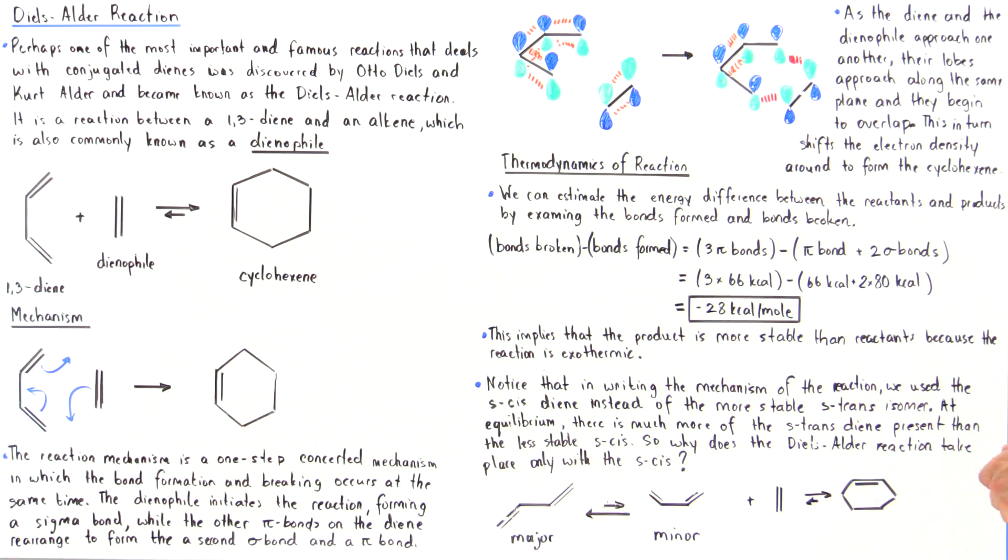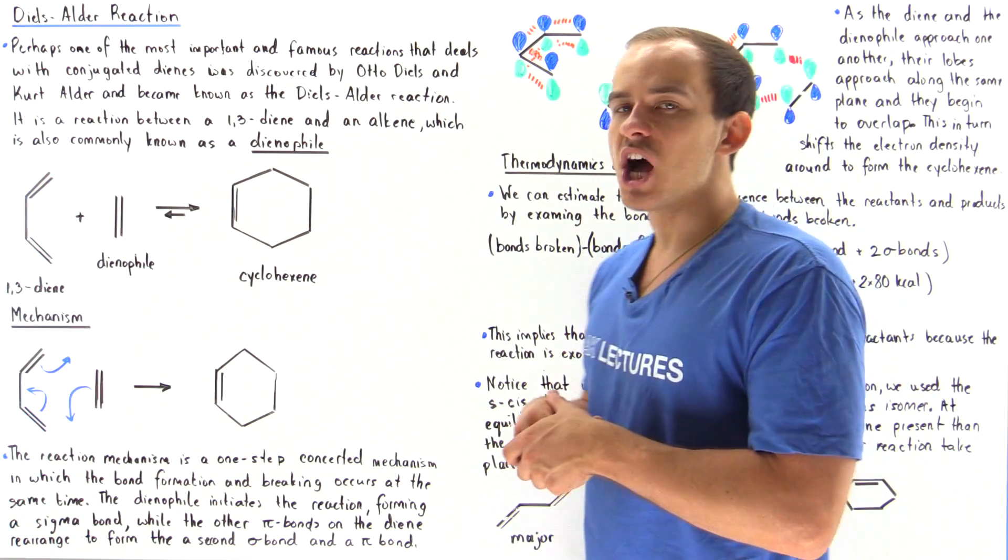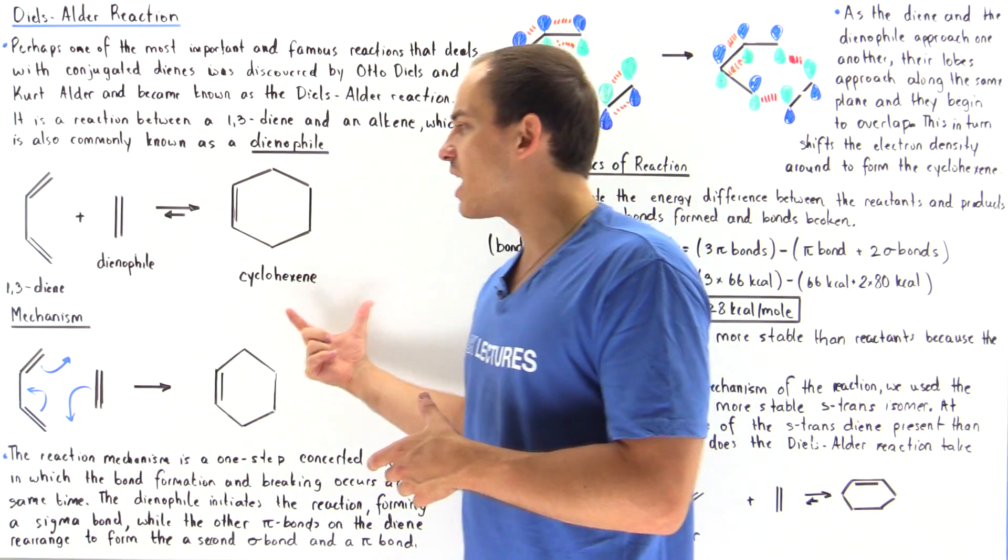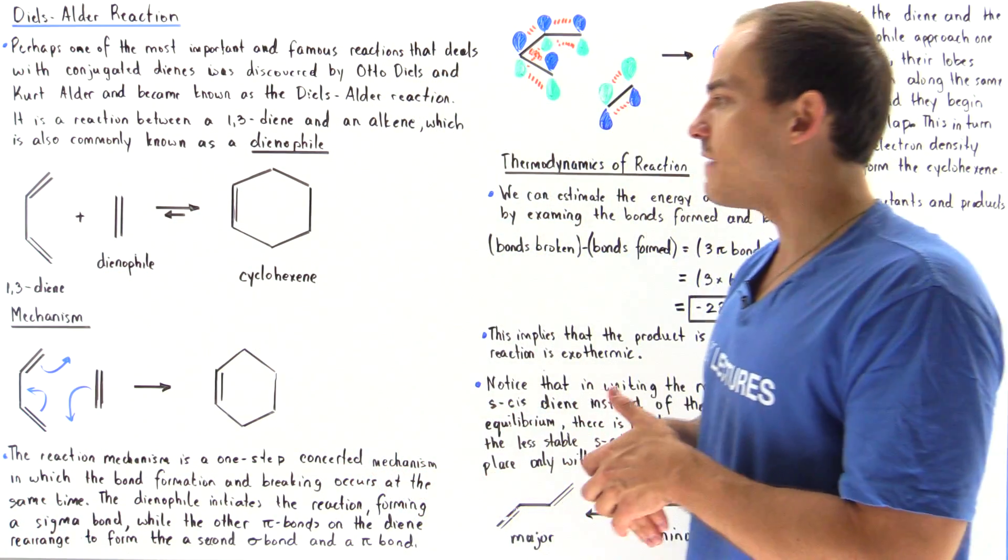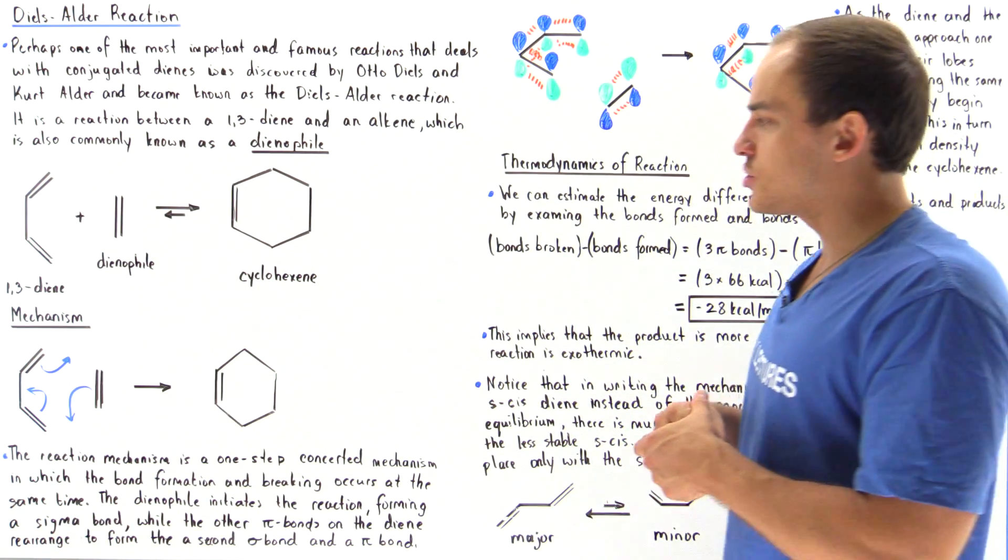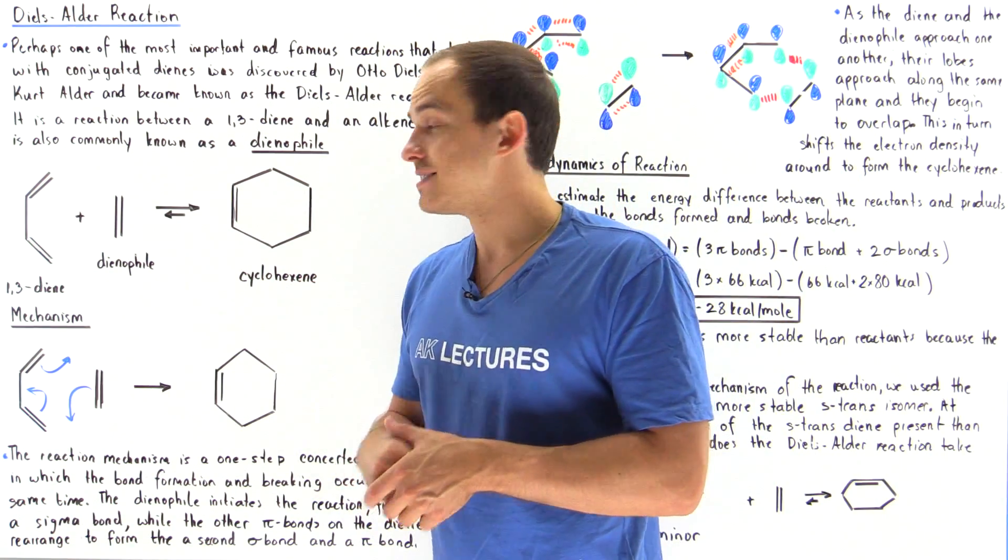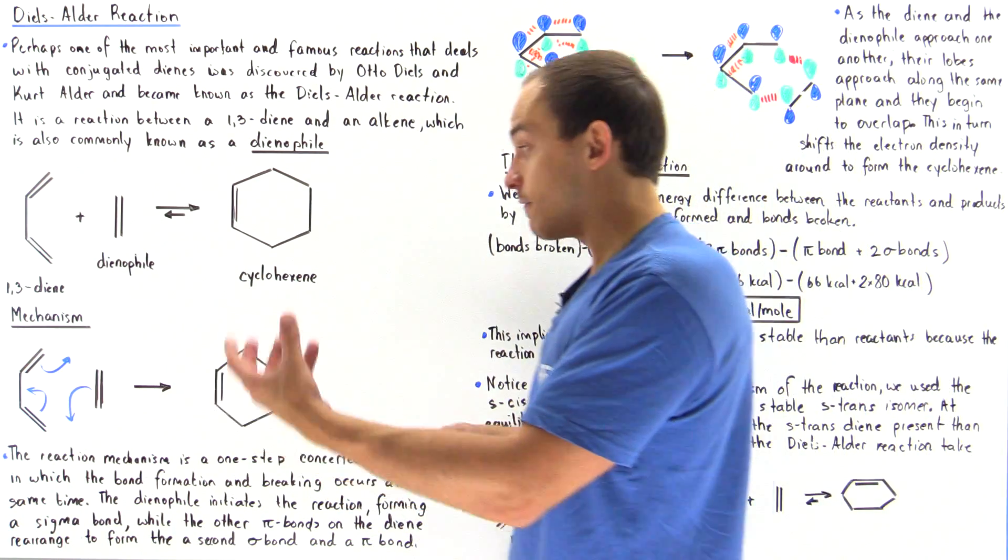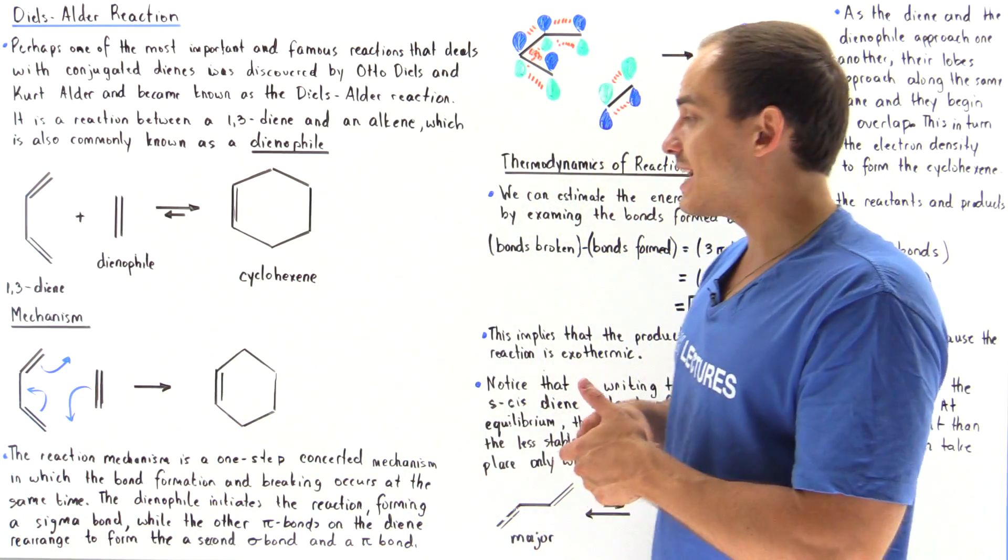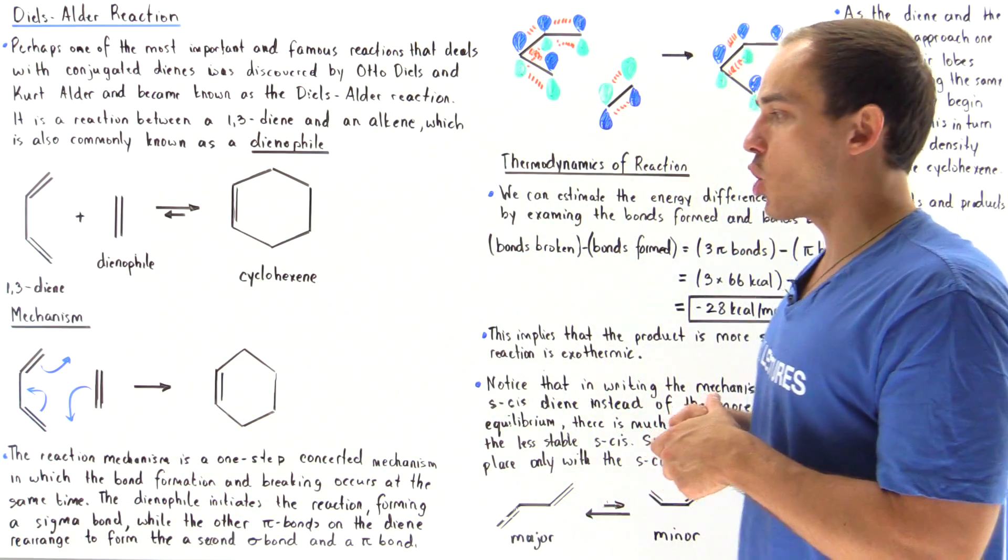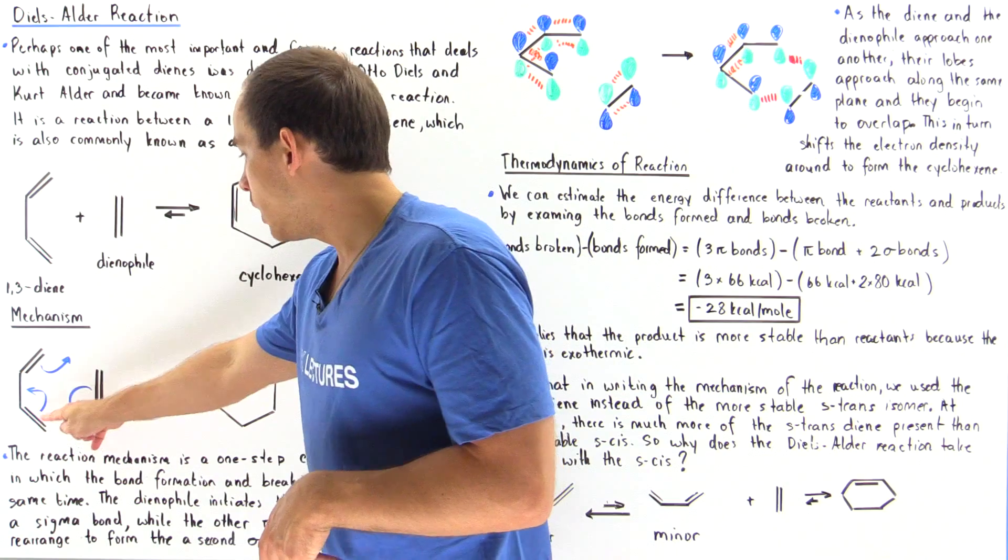Let's compare the stability of our product to the stability of our reactants. We can estimate the energy difference between the products, the cyclohexene, and the two reactants by discussing the bonds that are formed and the bonds that are broken. So which bonds are formed and which bonds are broken? We have one, two, three pi bonds that are broken